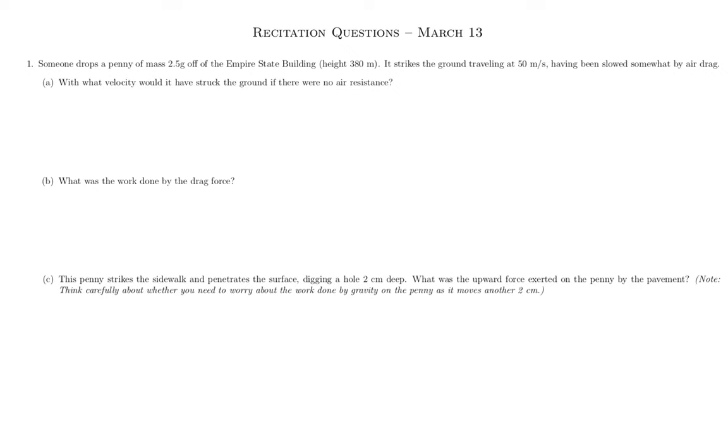In this problem, we have somebody dropping a penny off of the Empire State Building. So it's going to travel down, hit the ground at 50 meters per second. Now that's very fast. Gravity is accelerating it as it moves down. This is the unit on work and energy. So one way to think of this is that gravity is doing positive work on the penny, making it go faster and faster, increasing its kinetic energy as it falls. But air drag is also pushing it back upwards, reducing its kinetic energy.